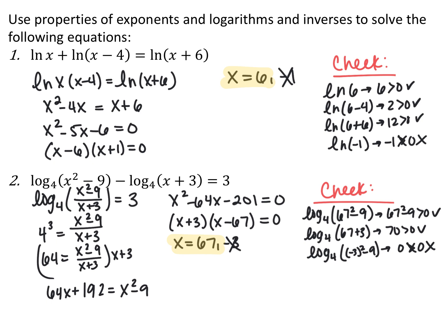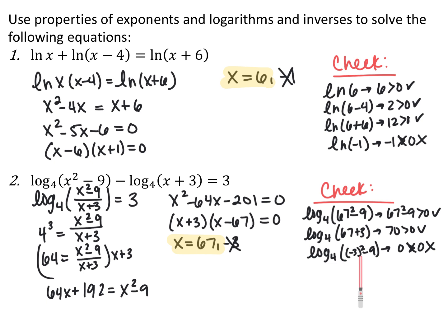For the next equation, I combine the first two logarithms since I'm subtracting two logarithms of the same base — I can divide inside the logarithm. Since the right side has no logarithm, I switch into exponential form: base stays the same, input and output switch, giving 4 cubed equals (x squared minus 9)/(x+3). Since 4 cubed is 64, I clear the denominator and solve the quadratic, getting x equals 67 and x equals negative 3. Checking: 67 works, but negative 3 makes the inside equal zero, so x only equals 67.